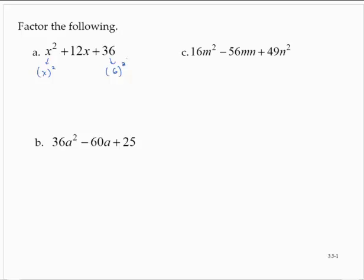When you notice that both the first and last terms of the trinomial are perfect squares, what you want to do is check to see if that middle term is 2 times the product of those bases. x times 6 is 6x. 2 times 6x is 12x. It fits the pattern.